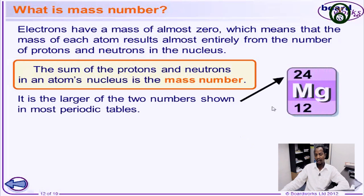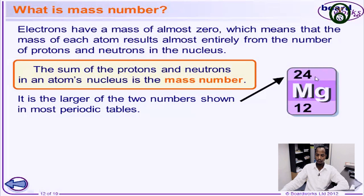Let's take a look at this magnesium atom. We agreed that the bottom number is the number of protons, which is 12. If the number of protons is 12, it means the atomic number is 12. The top number is the mass number, which is the total sum of the number of protons plus the number of neutrons found in the nucleus.